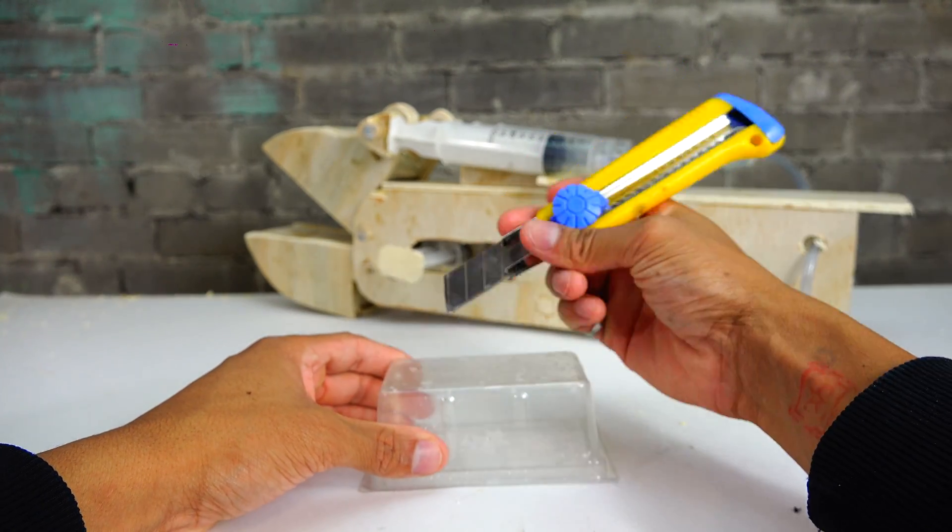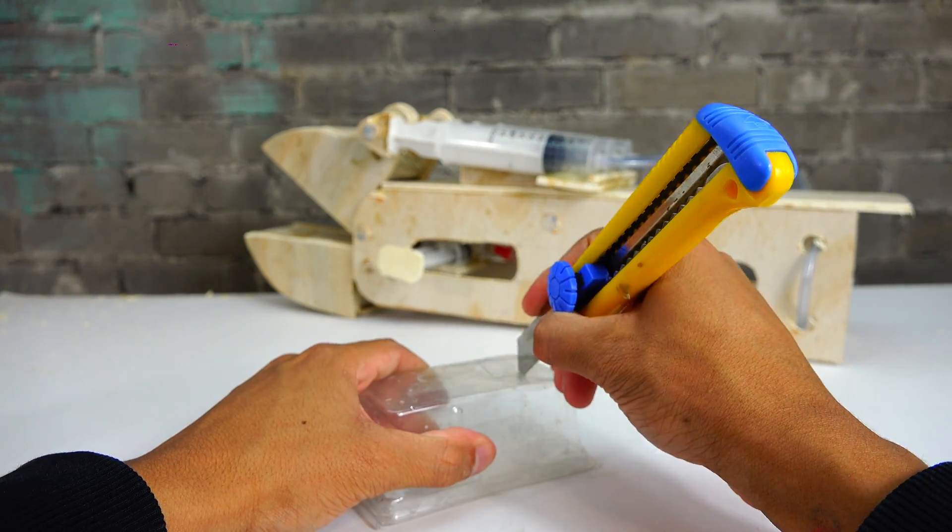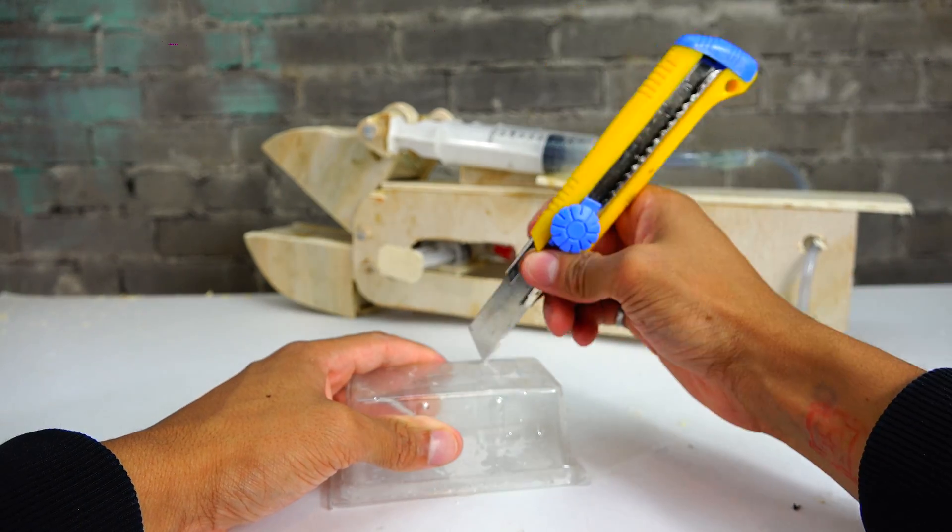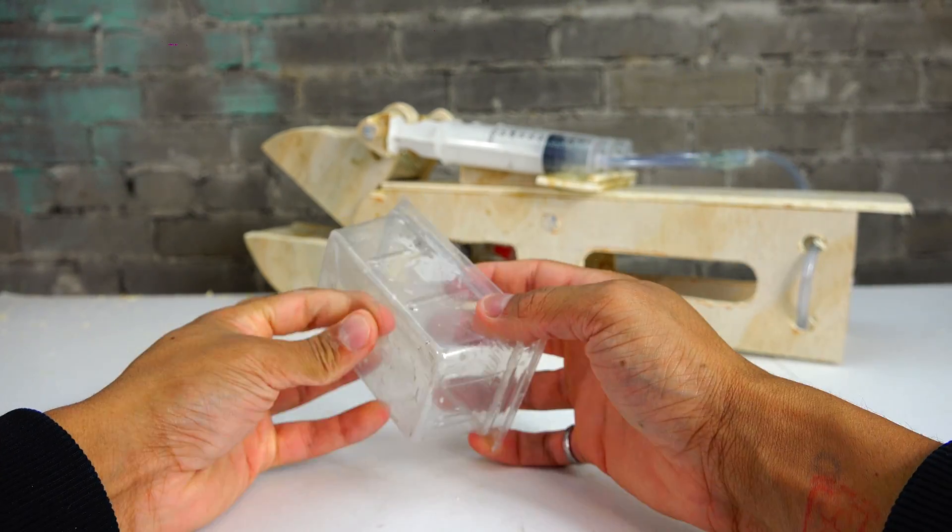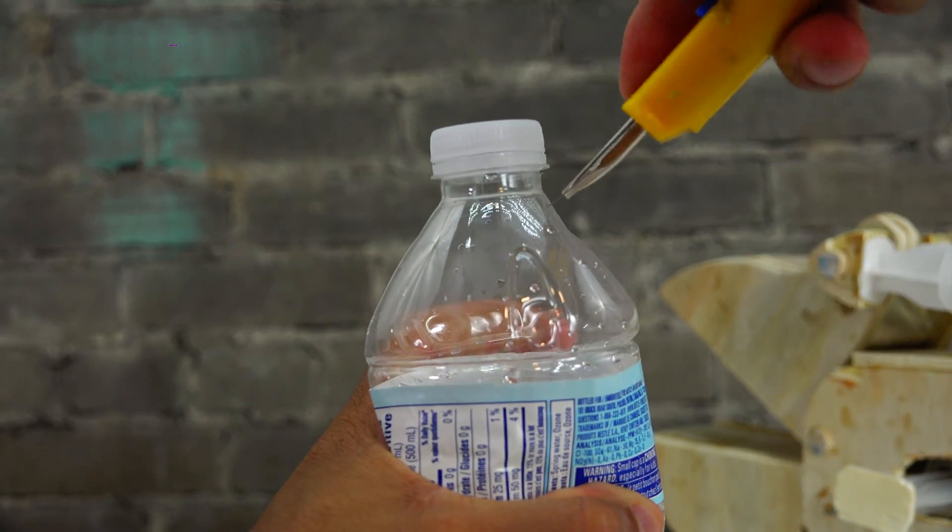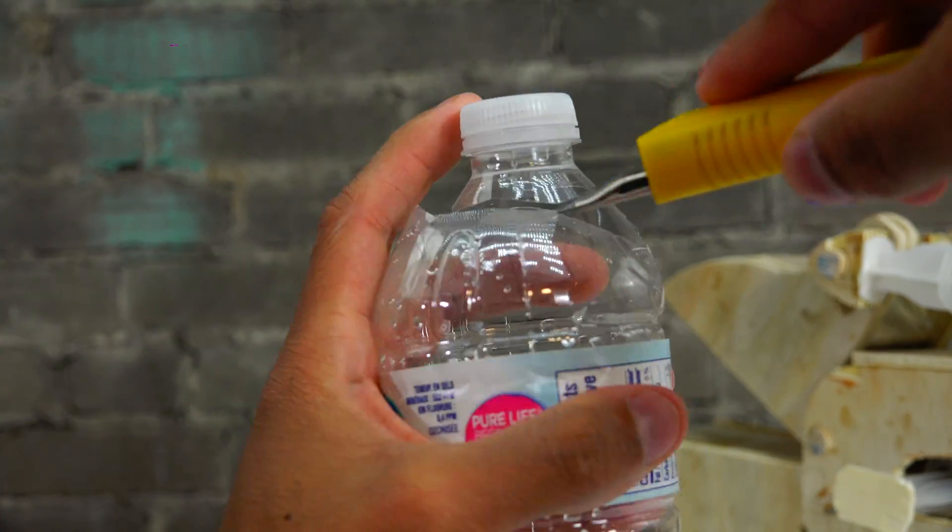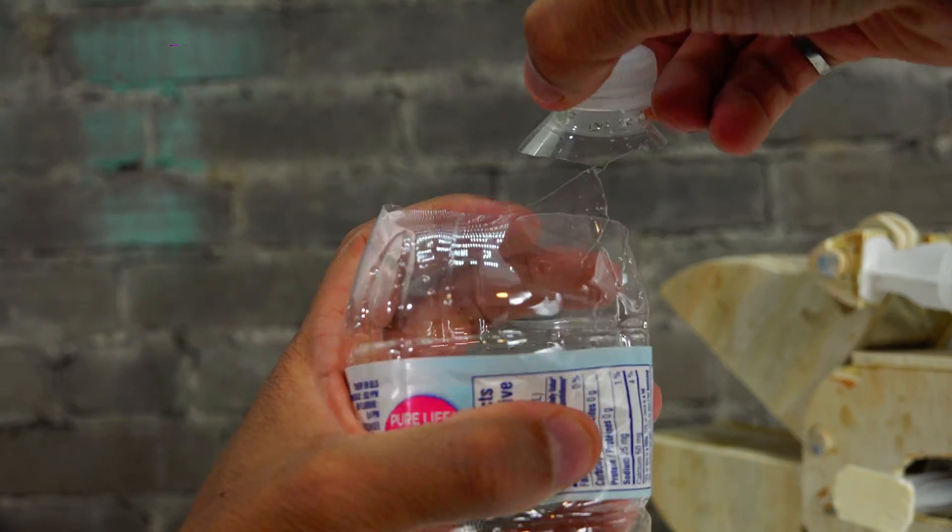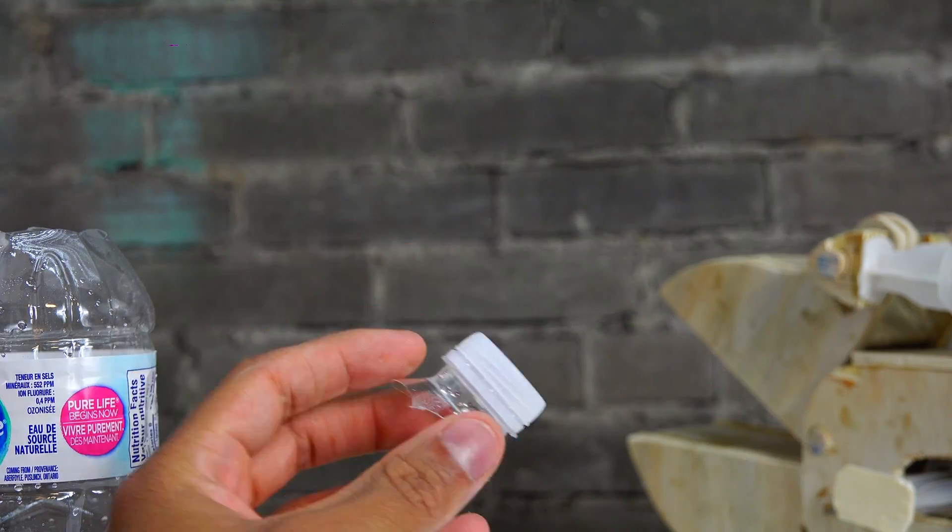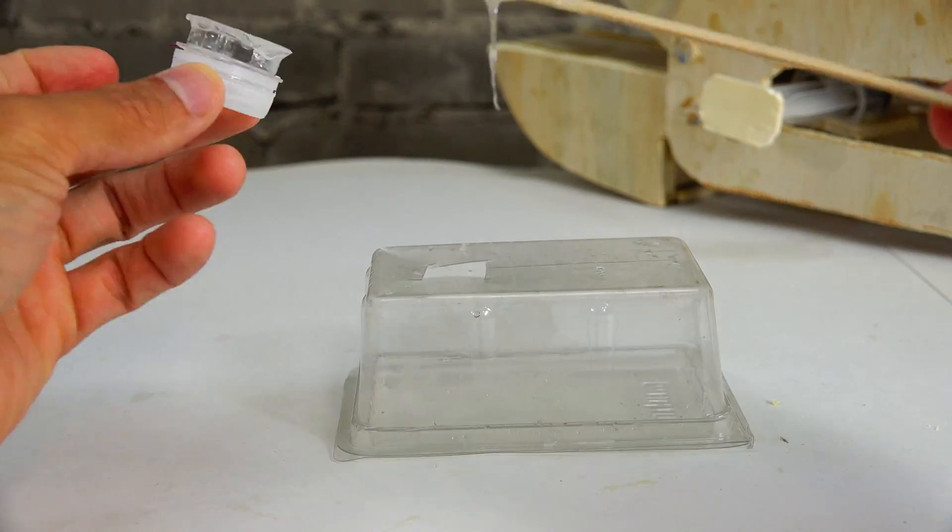Next we're going to need to make something to store the water. For this I just found a rectangular plastic container and cut a hole in it. And then I'll add a little lid in that as well. And for the lid we'll just use the lid of a water bottle. We can use some epoxy to glue it right onto the top.